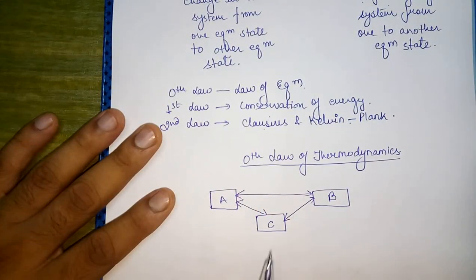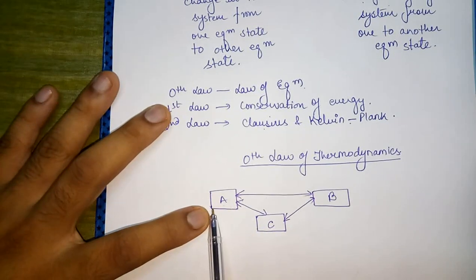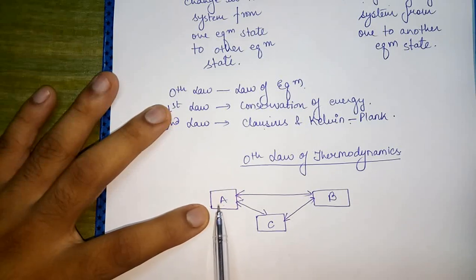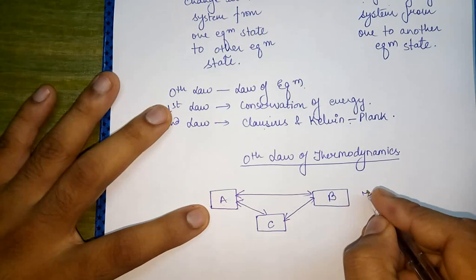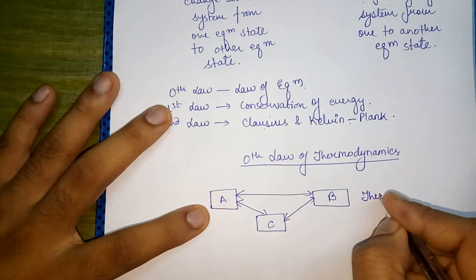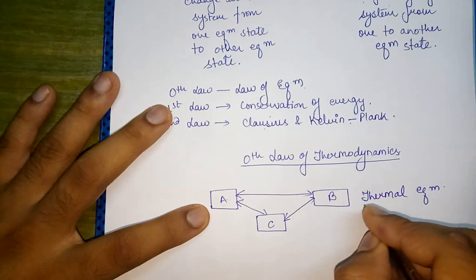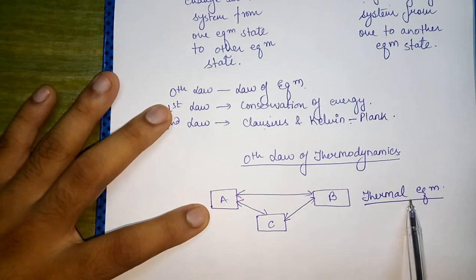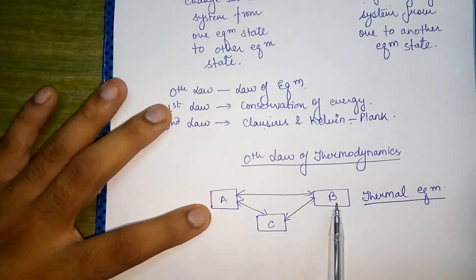From the zeroth law of thermodynamics, one thing can be understood: the flow of heat will take place from one body to another until the equilibrium is maintained. This equilibrium is called thermal equilibrium. Thermal equilibrium simply means that heat is flowing from body A to body B because the temperature of A is greater than the temperature of B.